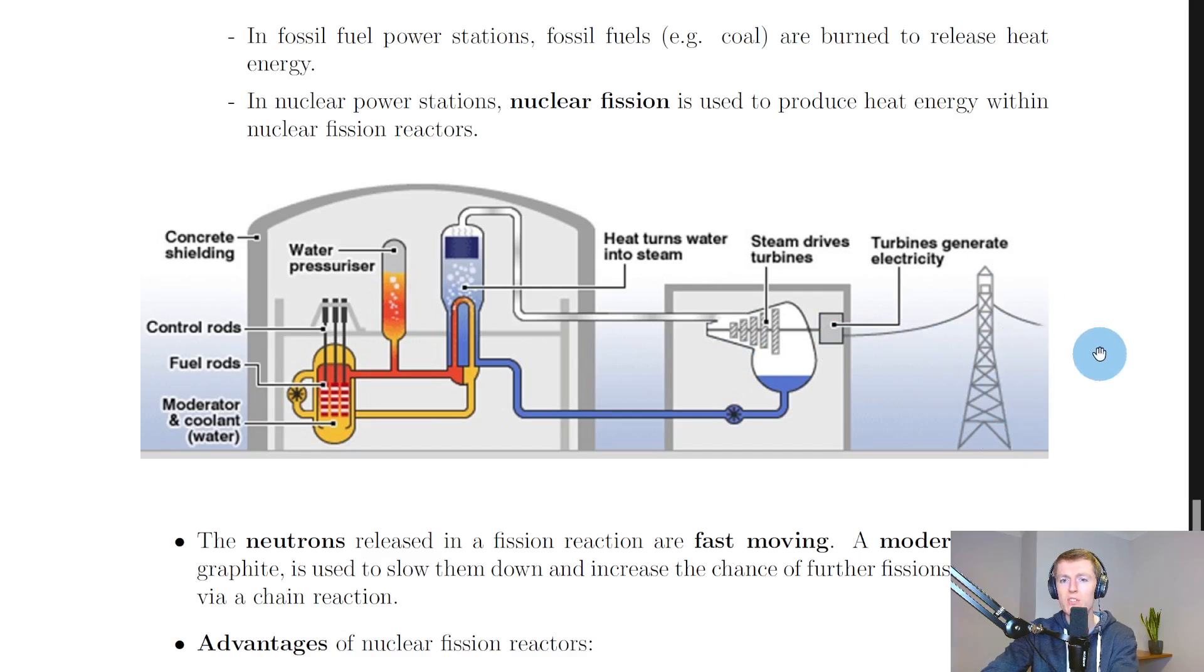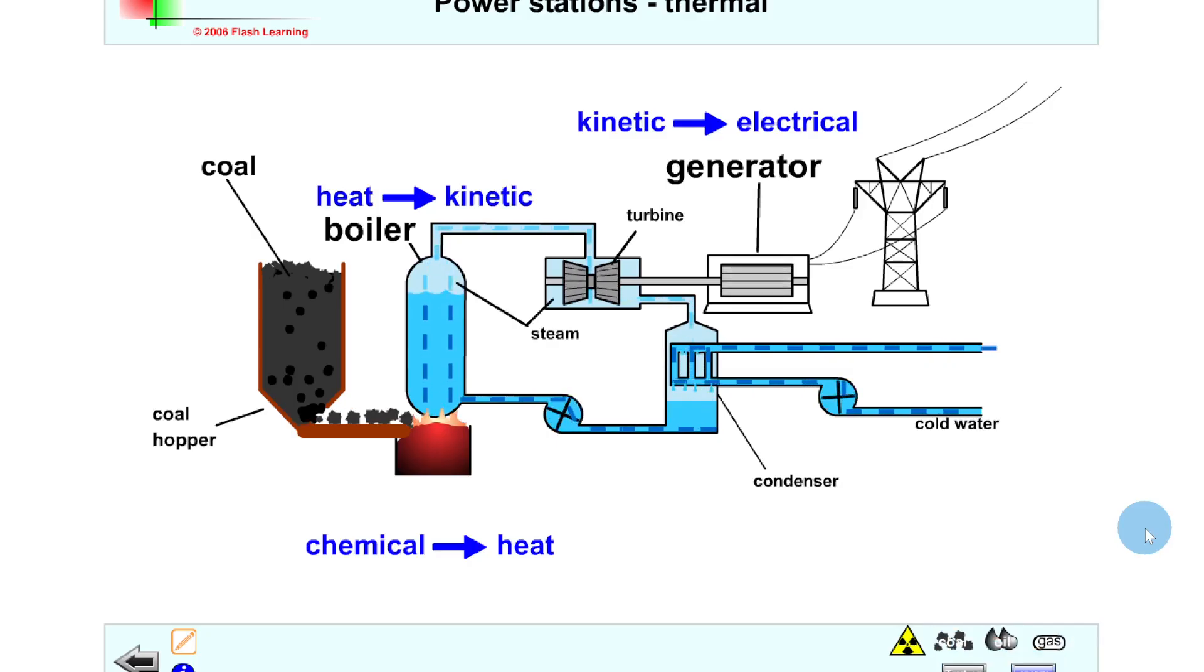So the electricity gets to buildings and homes. Now just to show you a simulation to help you understand this. In a thermal power station such as the one here that uses coal, you would burn coal in order to produce heat, which can then heat up the water to produce steam. And that steam then drives the turbine which drives the generator and produces electricity. And you'll see the energy changes at each stage here.